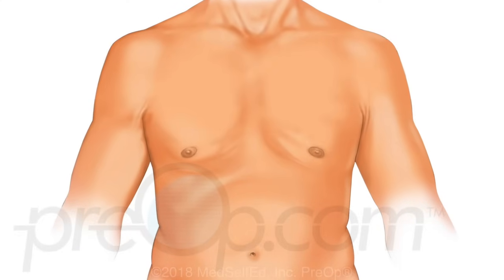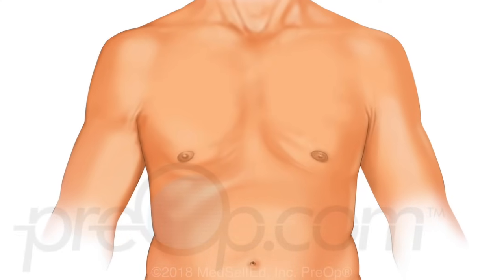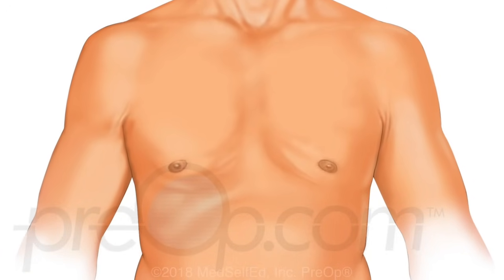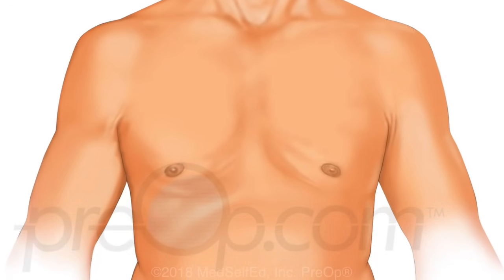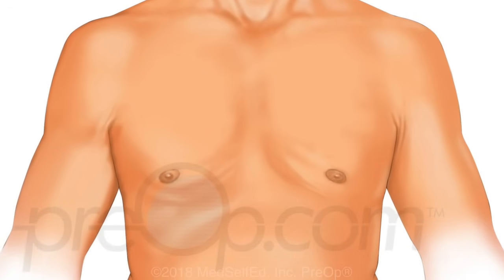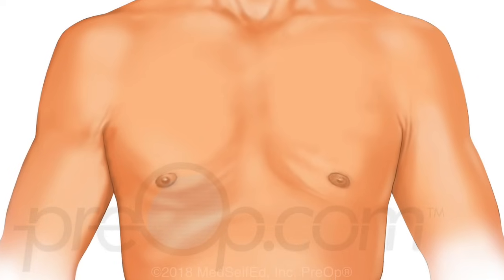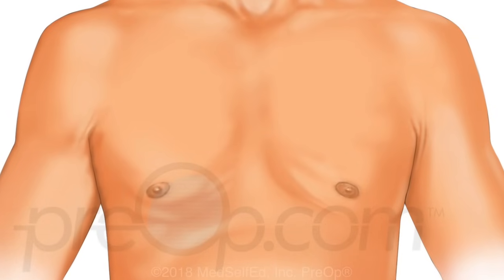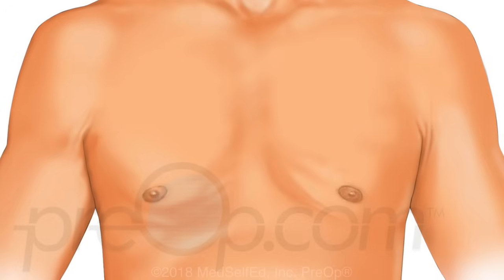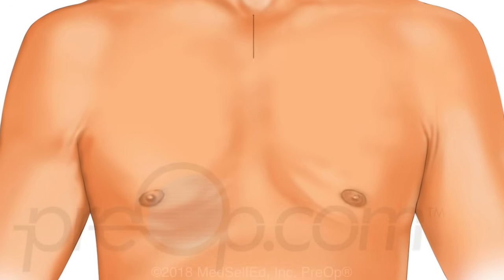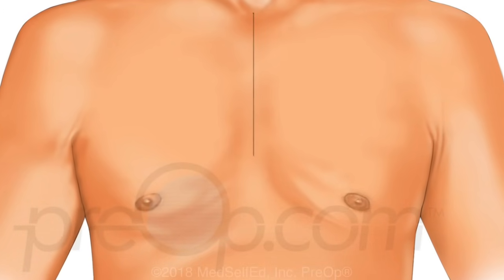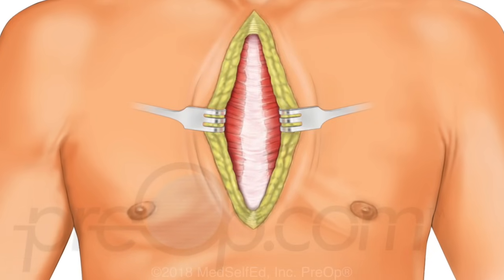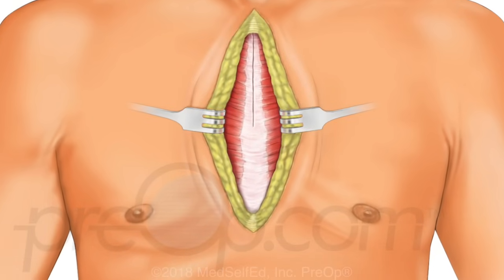Now let's look closer at the off-pump coronary artery bypass surgery. You will be given medication to be pain-free and asleep during this procedure. The necessary grafts are created by surgically removing sections of blood vessel from the leg and or arm as needed. These incisions are sutured and bandaged. To reach the heart, the surgeon makes an incision down the center of the chest. The sternum bone is carefully cut.